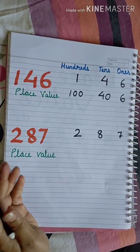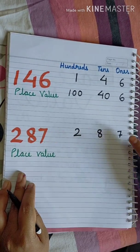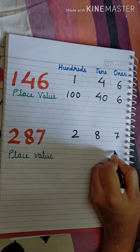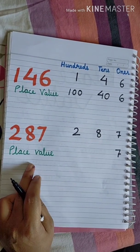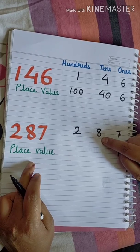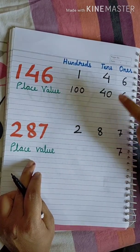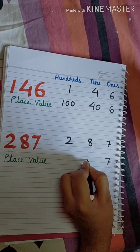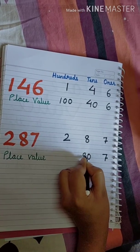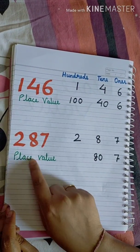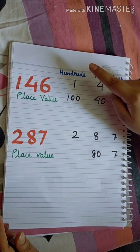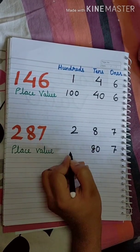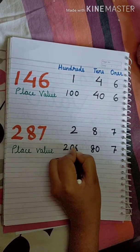Now we need to find out the place value. Place value of 7 is 7, because 7 is in the 1's place. Place value of 8 is 80, because 8 is in the 10's place — that means 8 times 10, which equals 80. Place value of 2 is 200, because 2 is in the 100's place — so 2 times 100 equals 200.